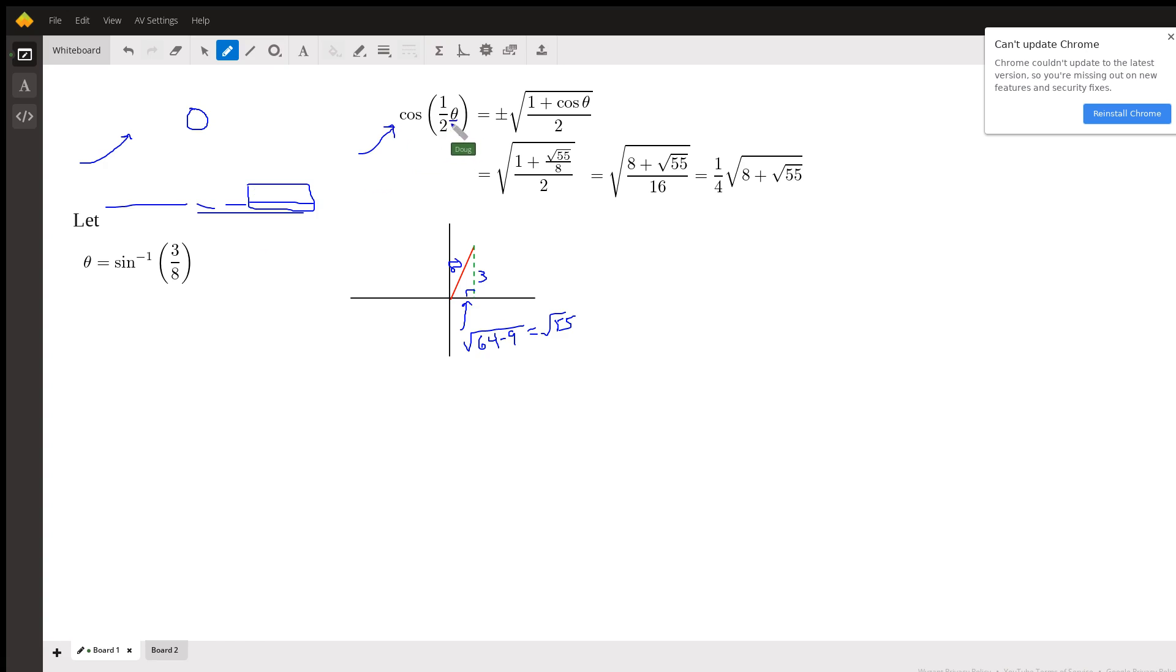But the cosine of half an angle looks like this. Once we've got that, we've got to be able to fill in that value right there. And this is where a little diagram helps.